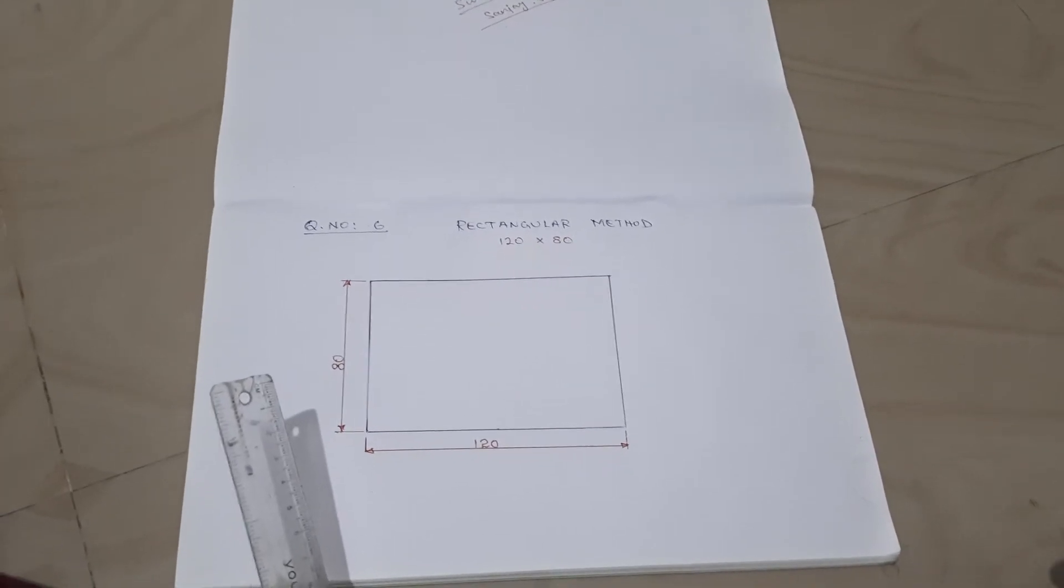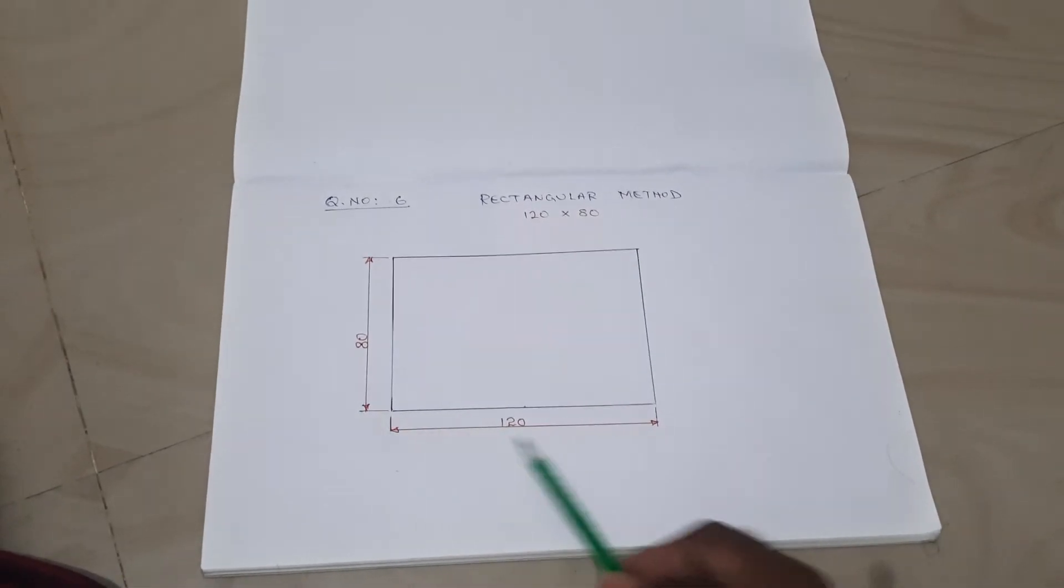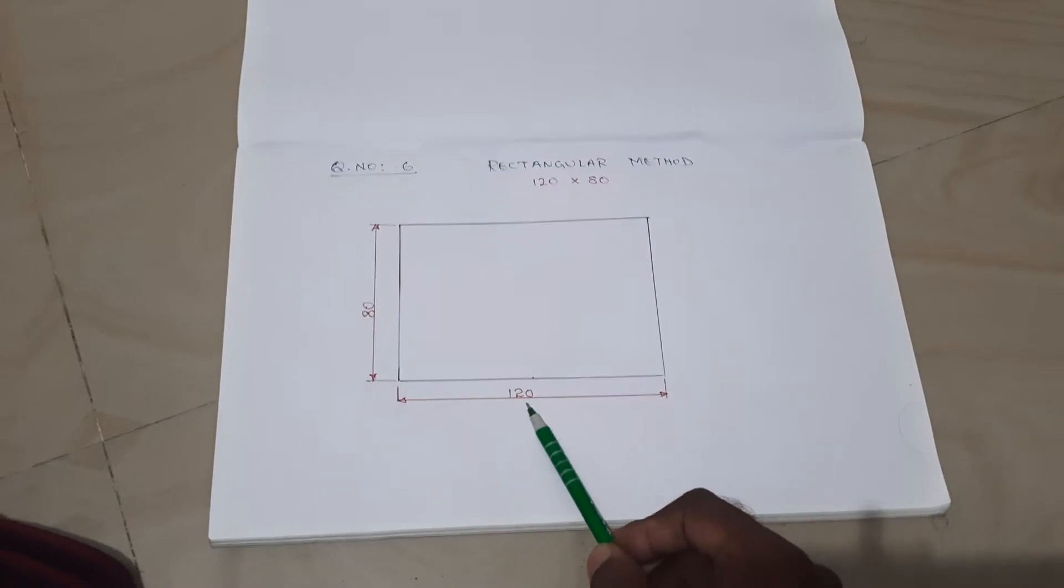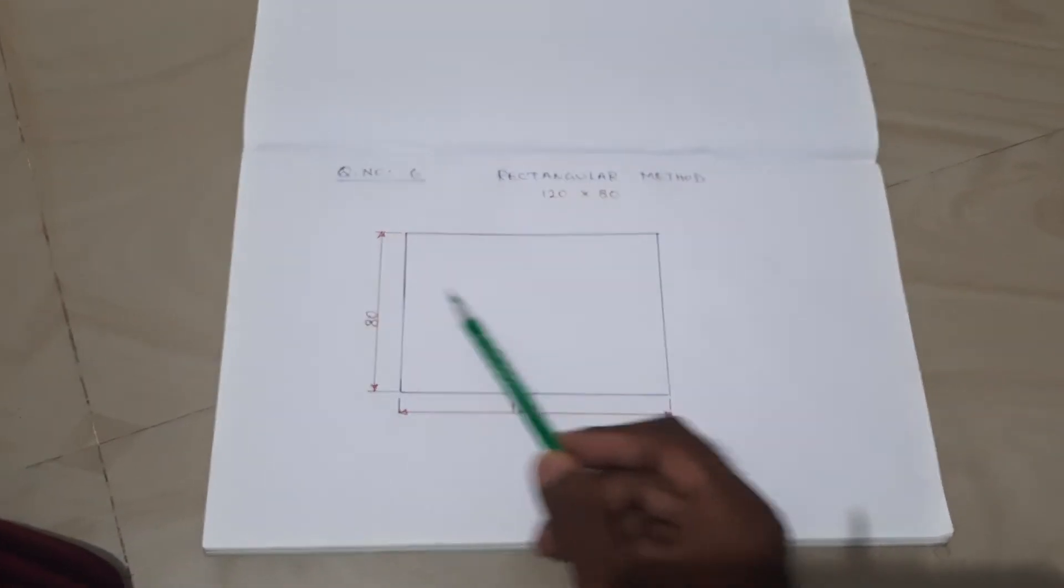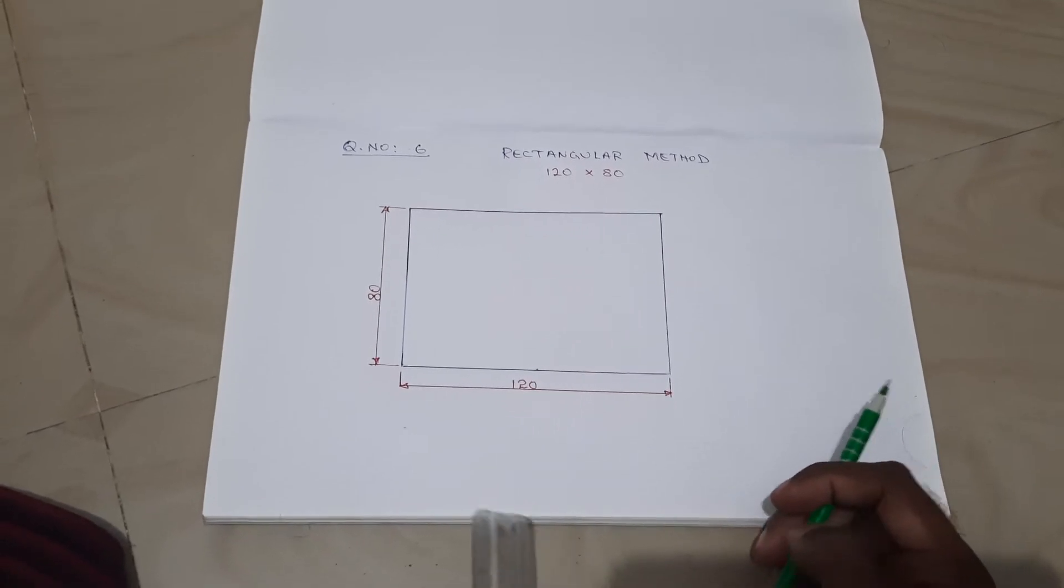So for question six, based on the question value of 120 mm and 80 mm, the first step will make a rectangle box. After that, dimensioning 120 mm then 80 mm. Then the rectangle was divided into two equal segments.